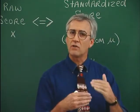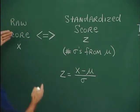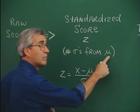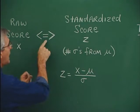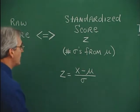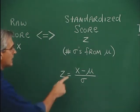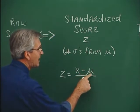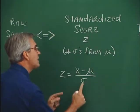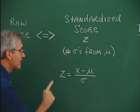This is the notion of standardizing information. We take a raw score x and standardize it. We call that standardized score a z-score, and it's nothing more than the number of standard deviations from the mean. We can take z-scores and turn them into raw scores, and we can take raw scores and turn them into z-scores. To find how many standard deviations from the mean: take the raw score, subtract the mean — that's distance from the mean — then divide by the standard deviation. That gives us the number of standard deviations from the mean that the x-value lies.